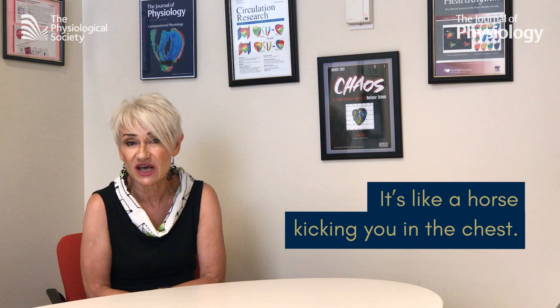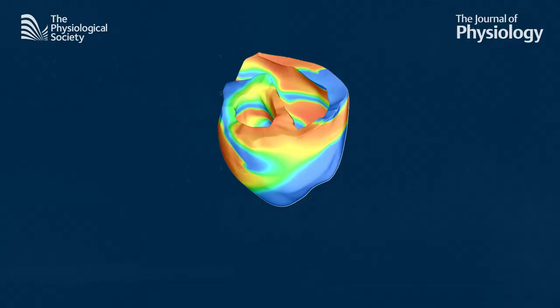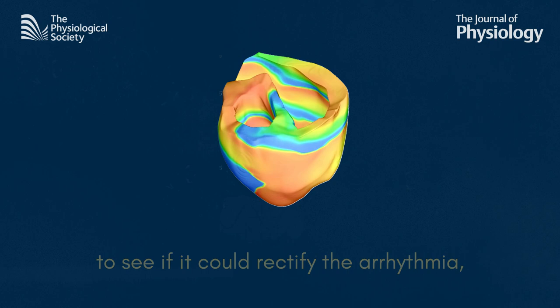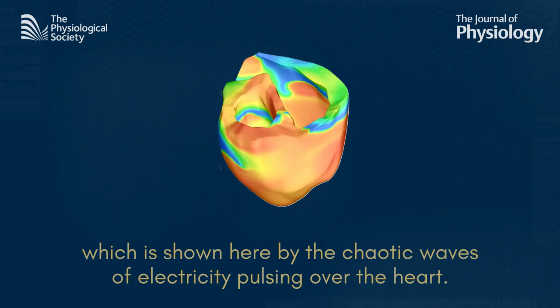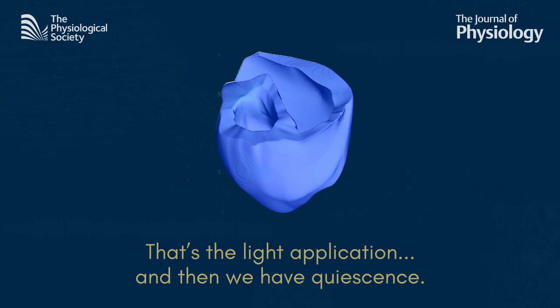These shocks are very painful — it's like a horse kicking you in the chest — and they also have a number of complications associated with them. So in their simulations, they tried firing light at various regions of the heart to see if it could rectify the arrhythmia, which is shown here by the chaotic waves of electricity pulsing over the heart. And that's the light application, and then we have quiescence. So we were successful in terminating this arrhythmia with the light pulse.